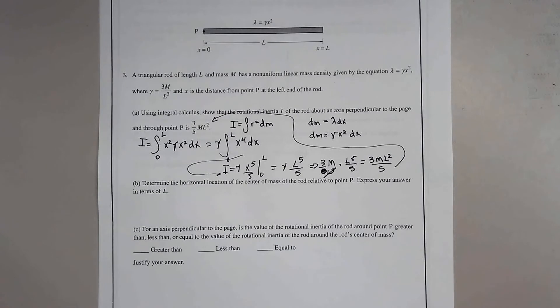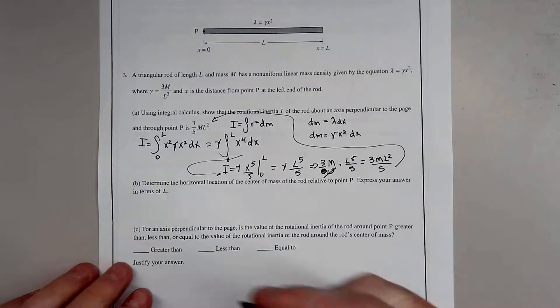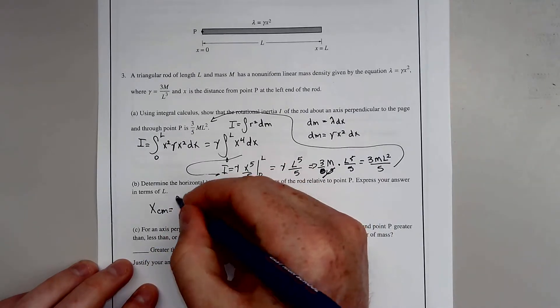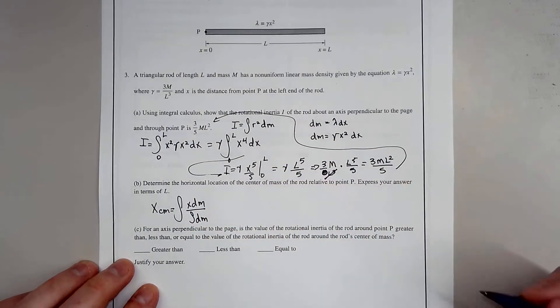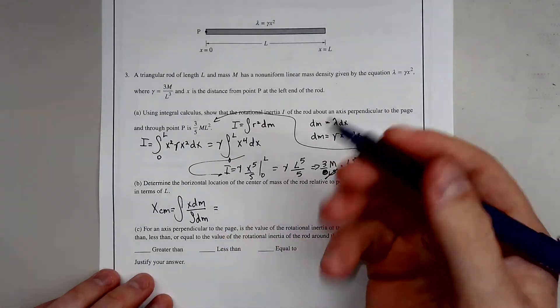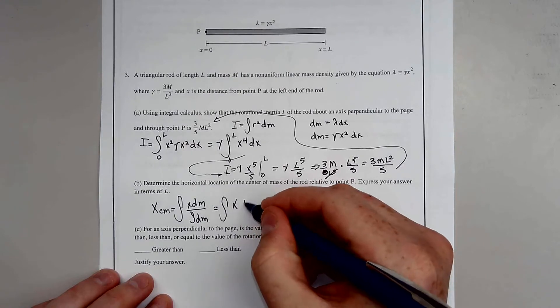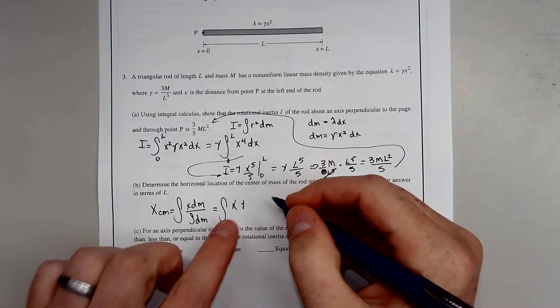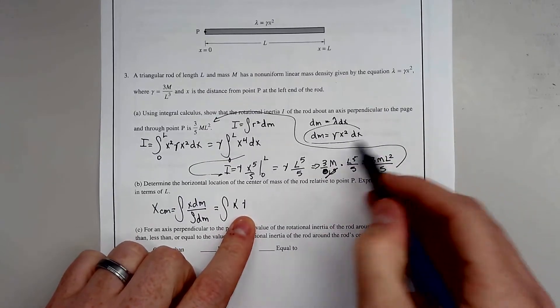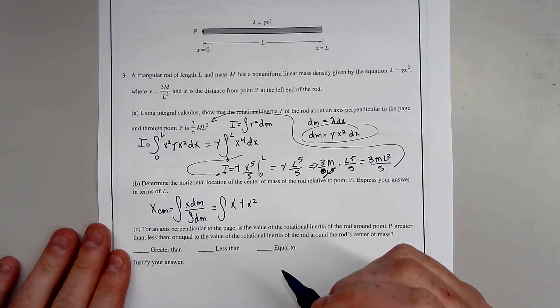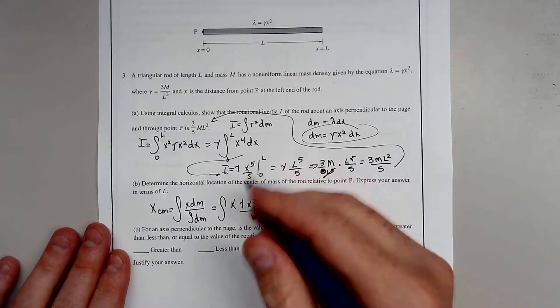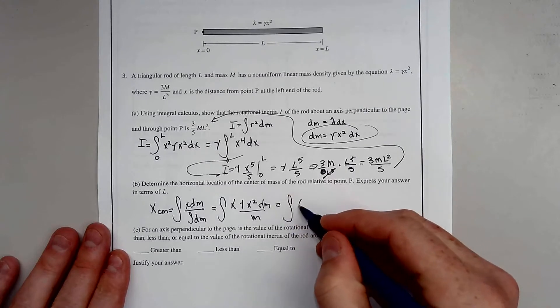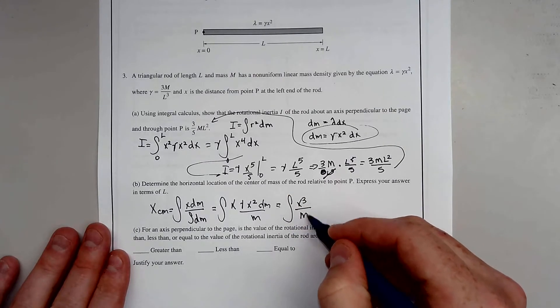Part B: determine the horizontal location of the center of mass relative to point P in terms of L. We know X center of mass equals the integral of X dM over M. We know dM is gamma X squared dX from before, so this gives us the integral of X times gamma X squared dX over M, which equals gamma over M times the integral of X cubed dX.